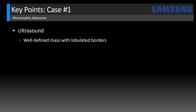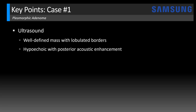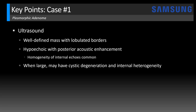On ultrasound, these tend to be well-defined masses with lobulated borders, hypoechoic with posterior acoustic enhancement. Homogeneity of internal echoes is common, so the case we just saw is very typical for pleomorphic adenoma. However, when larger, they may have cystic degeneration and internal heterogeneity, which can mimic a malignant parotid tumor. The vascularity is variable — they can be hypovascular or hypervascular, which is nonspecific. Generally, malignant tumors tend to have disorganized hypervascular flow, but that is also not always a reliable finding.